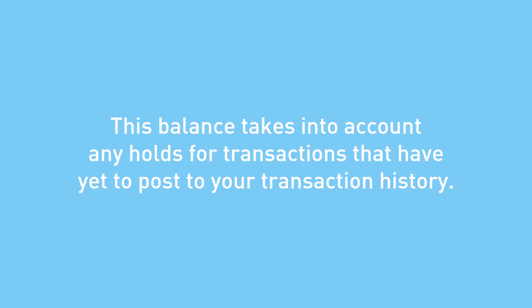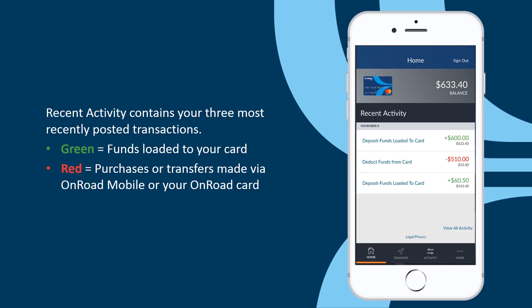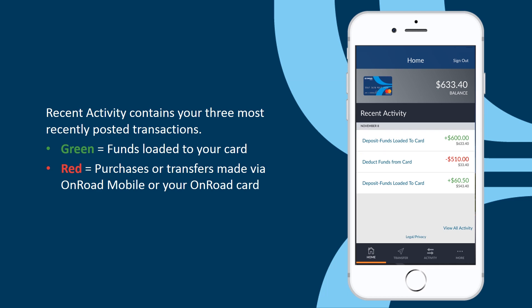This balance takes into account any transactions that have occurred but that have not yet posted to your transaction history. The Recent Activity section contains your three most recent posted transactions. Amounts in green represent funds that were loaded onto your OnRoad card, while amounts in red represent transactions deducted from your card balance.